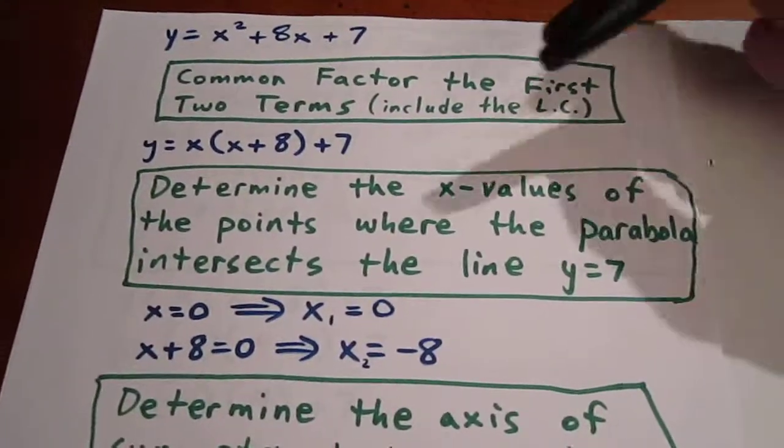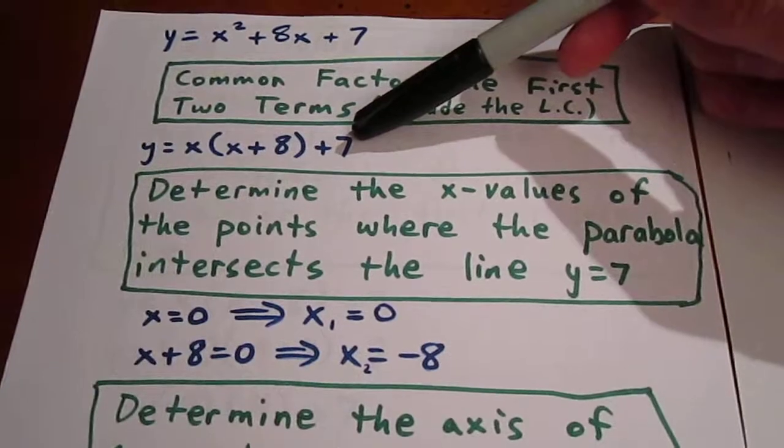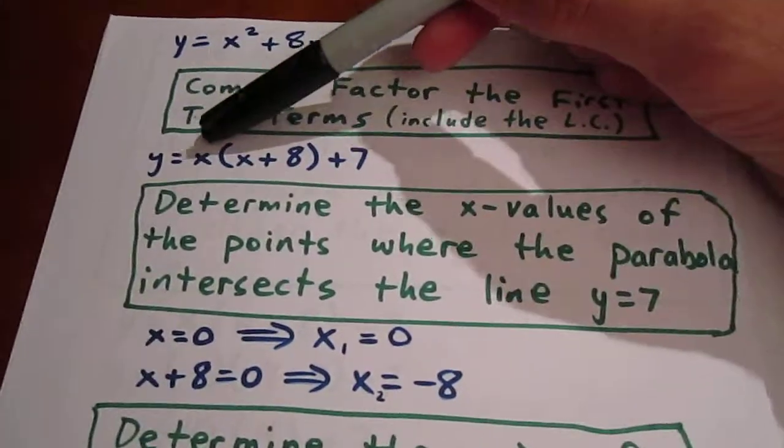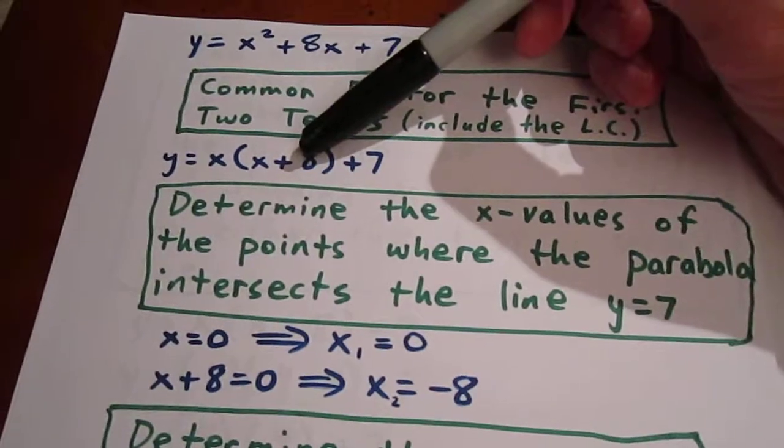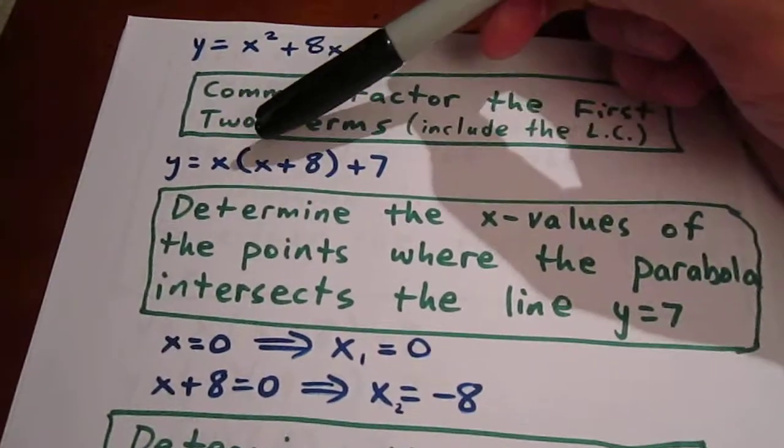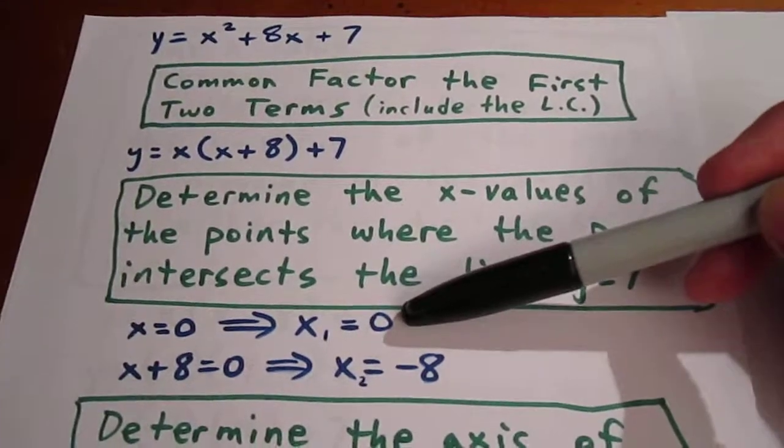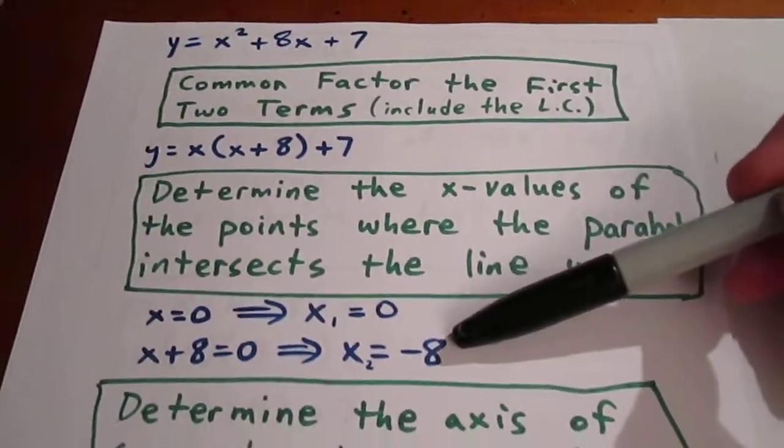It's easy for us to determine where this parabola intersects the line y equals 7 by simply focusing on this first part of the expression, letting it equal 0 and figuring out what x would equal. So x1 would be 0, x2 would be negative 8.